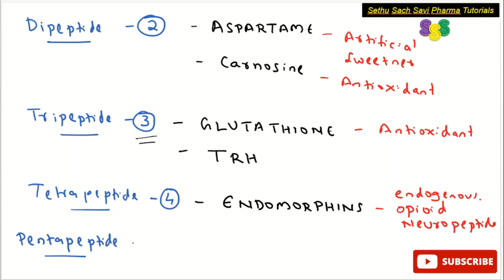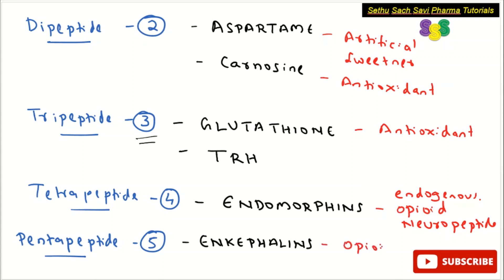Coming to pentapeptide — the number of amino acids is five. The important example to remember is enkephalins, which are examples of pentapeptides made up of five amino acids. Similar to endomorphins, enkephalins are also endogenous opioid neuropeptides, and they are an example of pentapeptides.